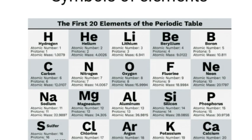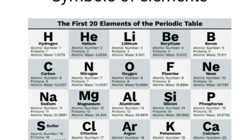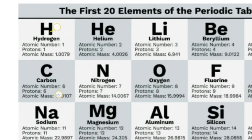The first element of the periodic table is hydrogen. The symbol is H. The atomic number is equal to 1, the number of protons is equal to 1, and the atomic mass is also given.